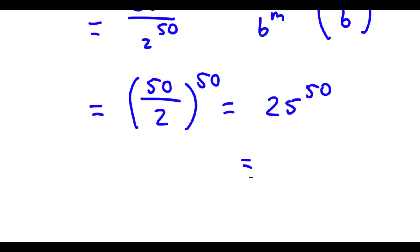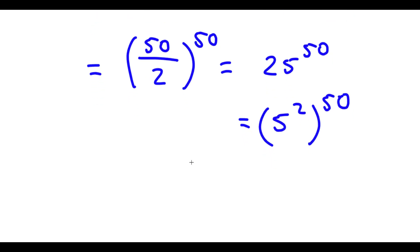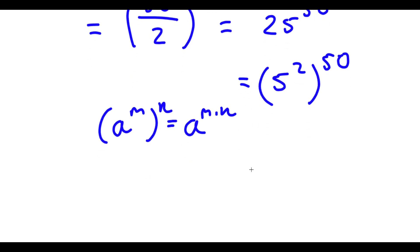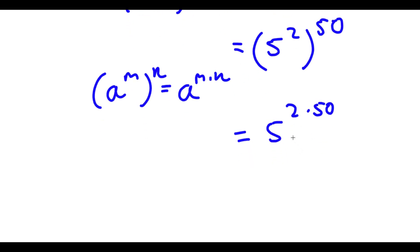So now I have 25 to the power of 50. And 25 is the same thing as 5 squared, so now I have 5 squared to the power of 50. Now if I have something in the form a to the power of m to the power of n, this is equal to a to the power of m times n. So 5 to the power of 2 to the power of 50 is equal to 5 to the power of 2 times 50. And 2 times 50 is 100, so 5 to the power of 100 is my answer.